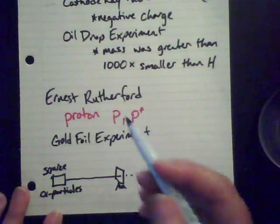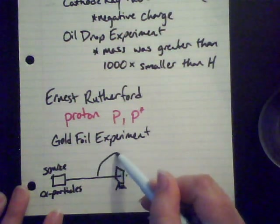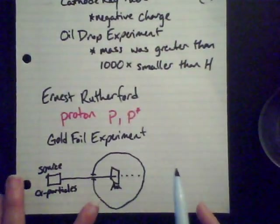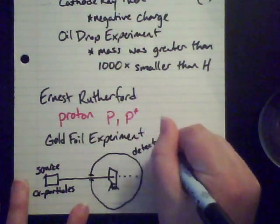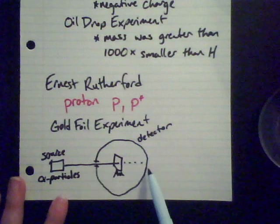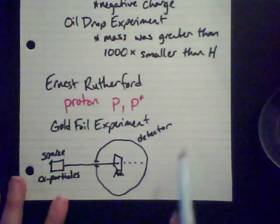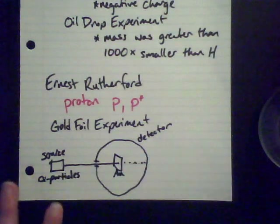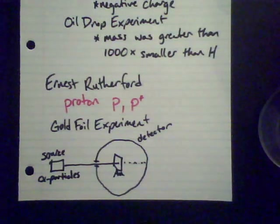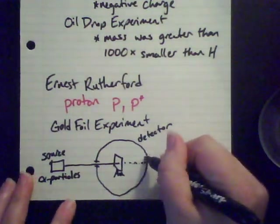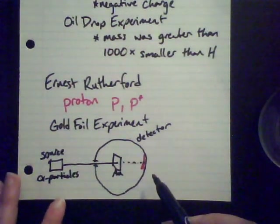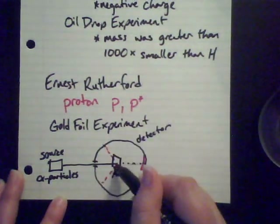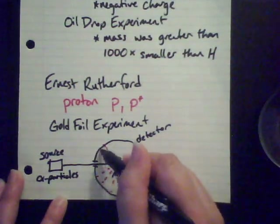What he expected was: if the atom is mostly empty space, then shooting particles at it should make them go straight through. He set up a detector around his gold foil — like a photography film — and every time the alpha particles struck the detector, that would be recorded. As he anticipated, many of the alpha particles came straight through and hit the back. But to his surprise, some of them deflected off — some deflected almost straight back.